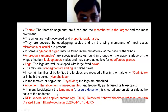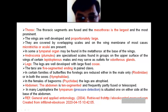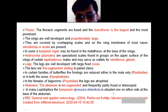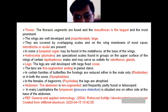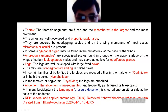The abdomen is ten-segmented and frequently partially fused or telescoped. In many lepidopteran insects, the tympanum — a scale-like structure — is situated on either side of the base of the abdomen, around the tympanal organ. The role of this tympanum is pressure detection.